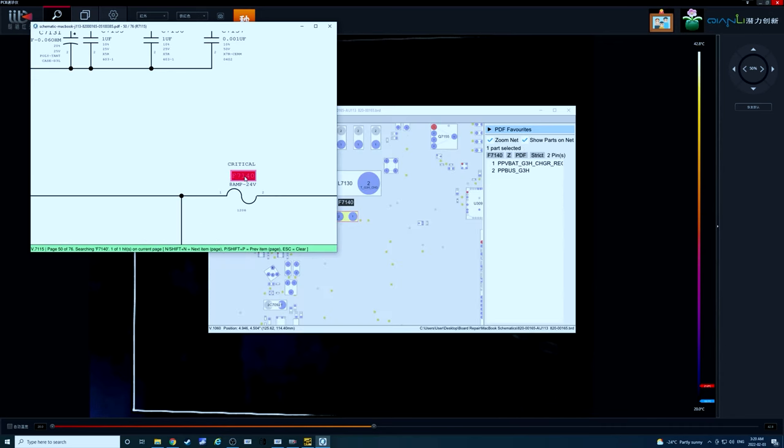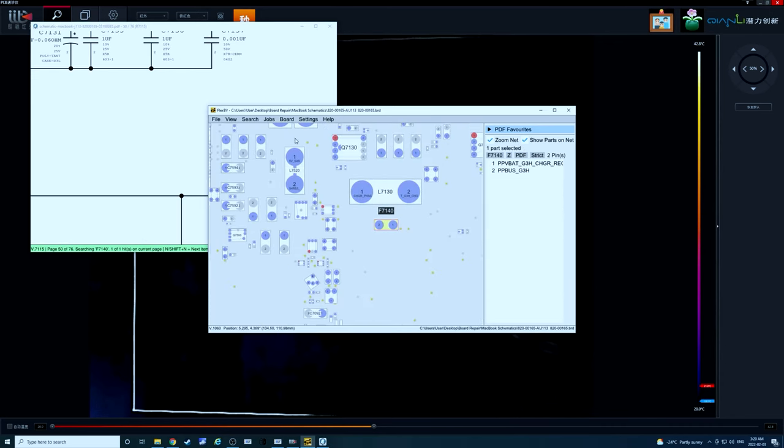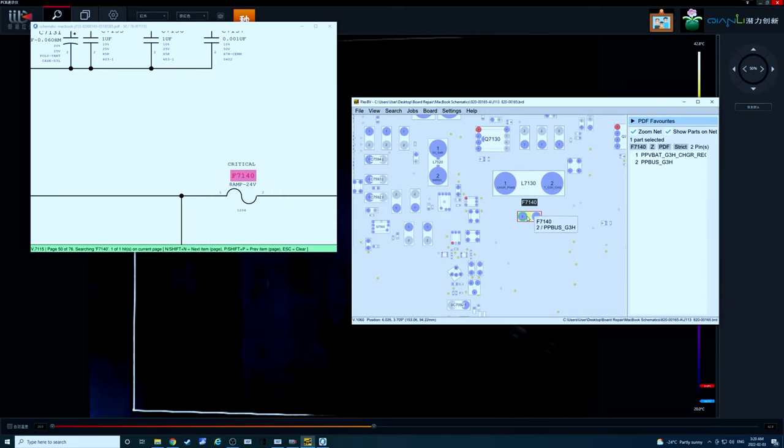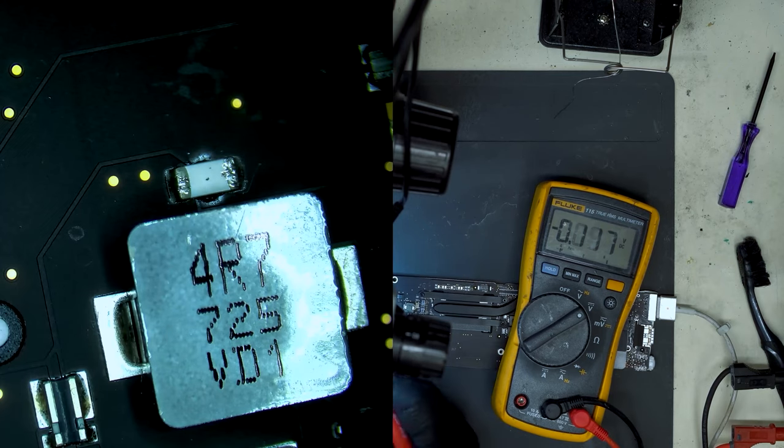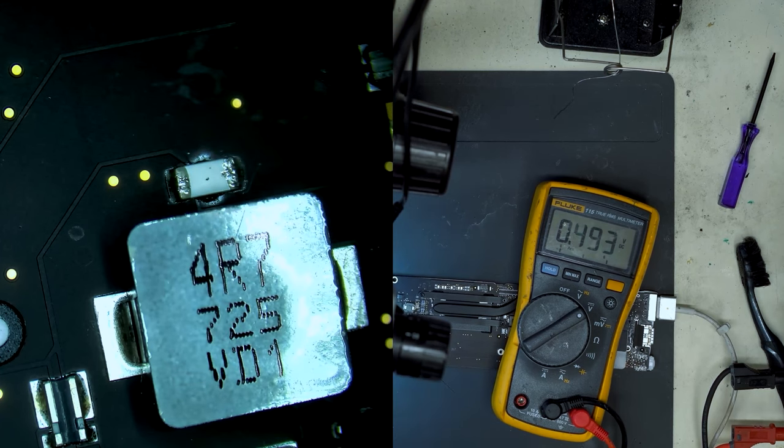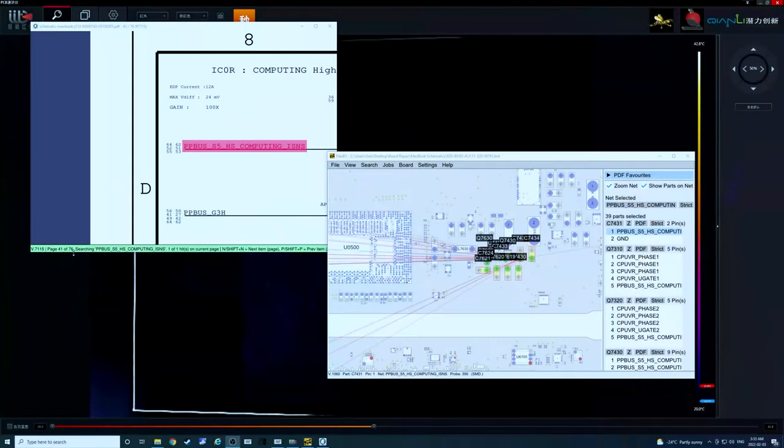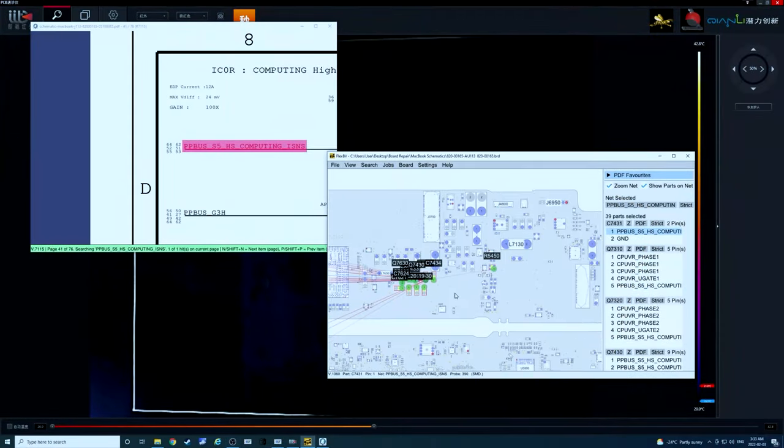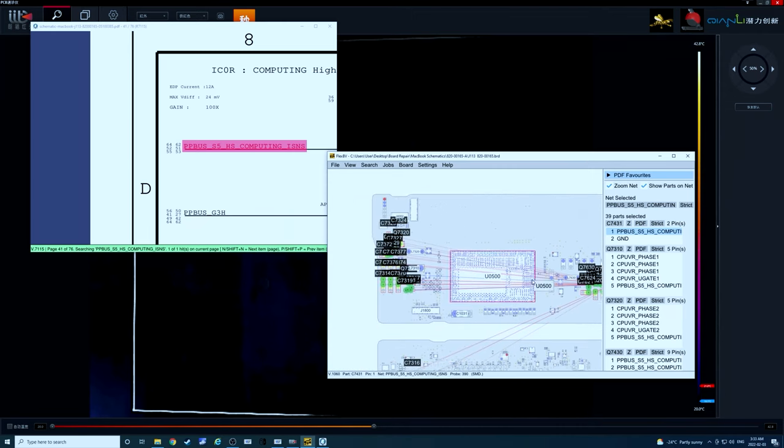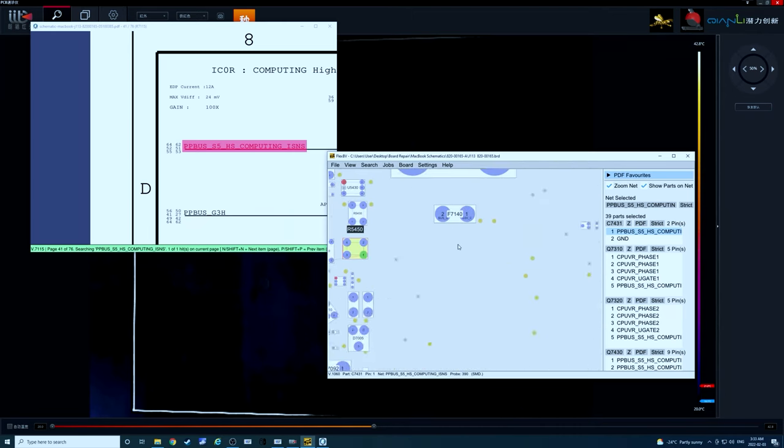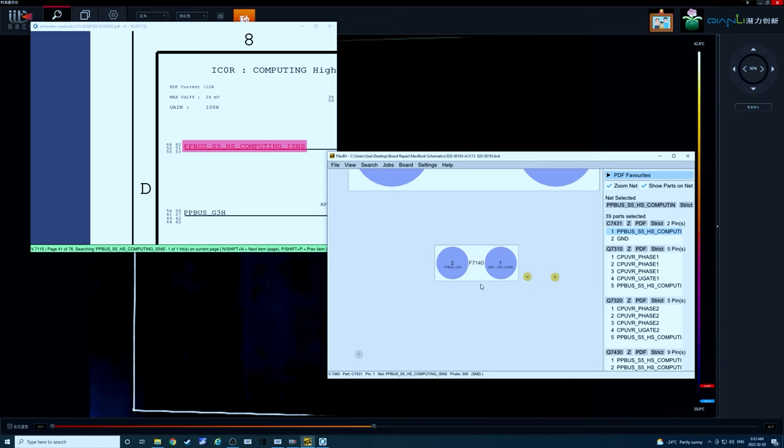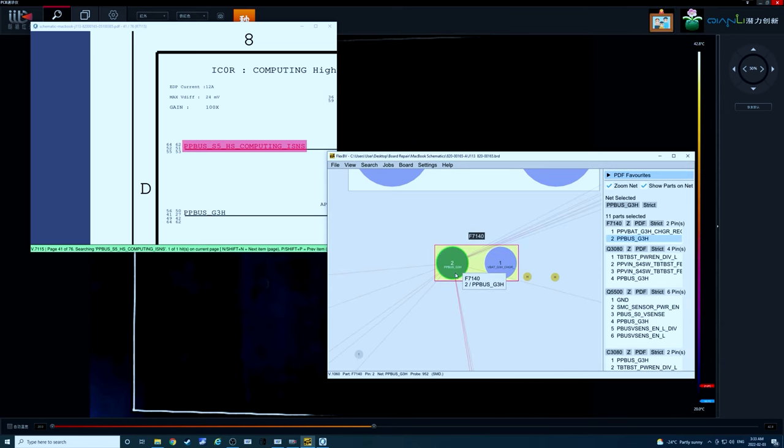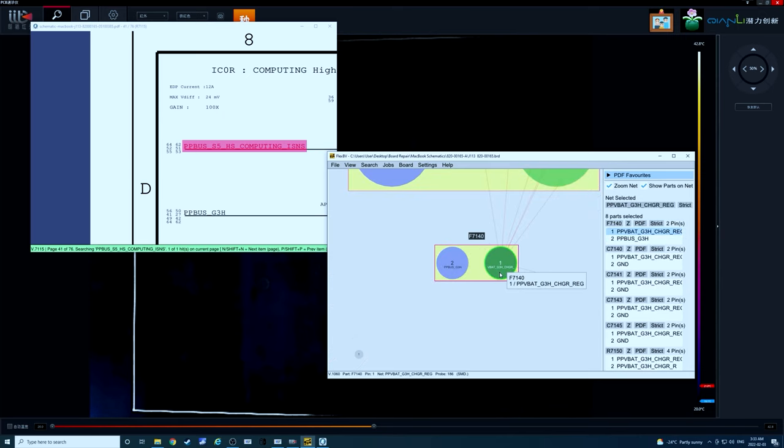So this is where PPBus G3 hot is created and sent to the system. Actually goes right through that fuse. So this fuse if we switch to the display screen quickly is located right here F7140. On one side we have PPBus G3 hot the main power rail to the machine and on this side we have PPV bat.